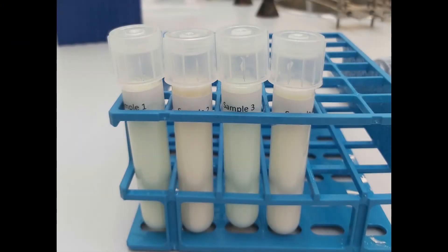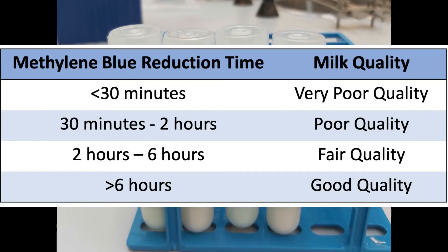The speed at which reduction occurs in a milk sample indicates the quality of the product. Here is an example of what your samples may look like after a two-hour incubation, with the methylene blue of samples two and four already reduced. If the reduction time occurs within 30 minutes, this indicates the sample is of very poor quality. A reduction time between 30 minutes and two hours is indicative of poor quality, whereas a colour change occurring between two and six hours indicates the sample is of fair quality. Finally, if the methylene blue takes more than six hours to decolourise, the milk sample can be classed as being of good quality.